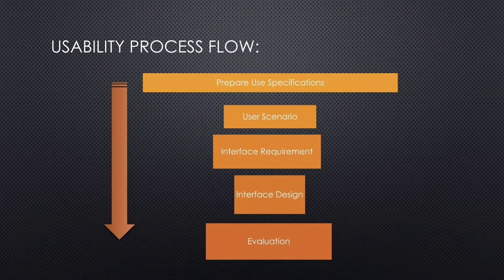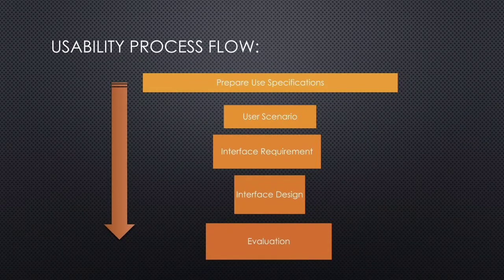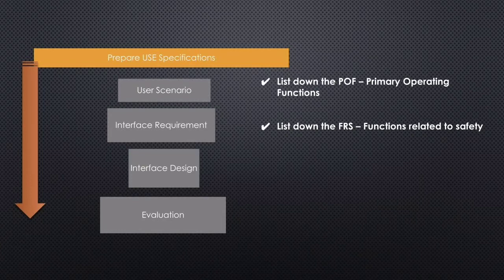Next, we have to consider the usability process flow while designing or developing a product. The steps are: prepare user specifications, user scenarios, interface requirements, interface designs, and evaluate those things. First, in preparing the user specifications, we have to list down the primary operating functions and function-related safety for the user.